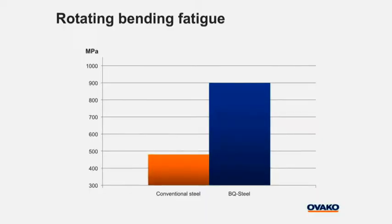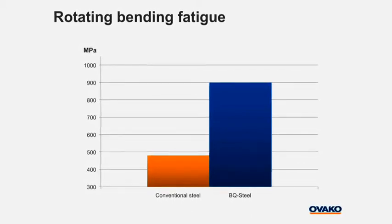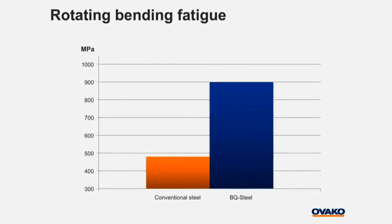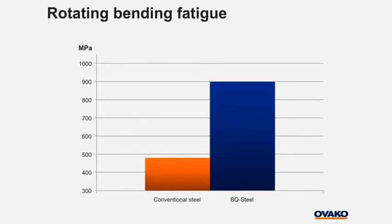For the end customer, it is most important how the properties are affected. Fatigue testing is often used for process development and benchmarking. Ovaco BQ steel will, for the standard test used, obtain around 900 MPa in fatigue limit. The expected fatigue limit for a conventional steel with a larger inclusion distribution could be under 500 MPa.